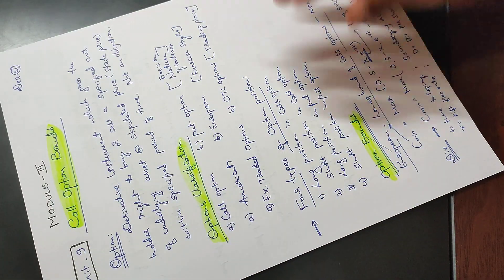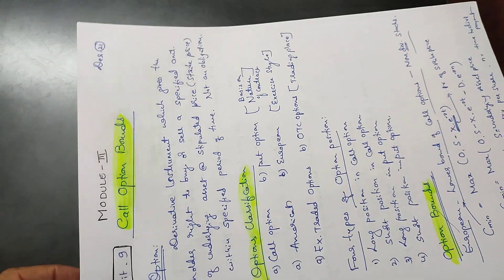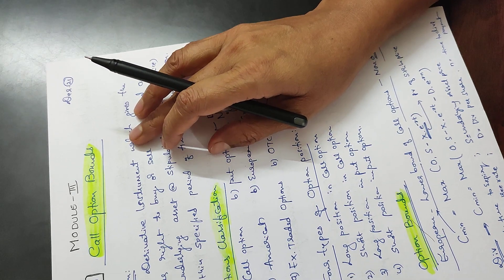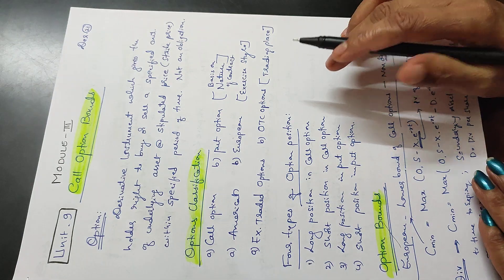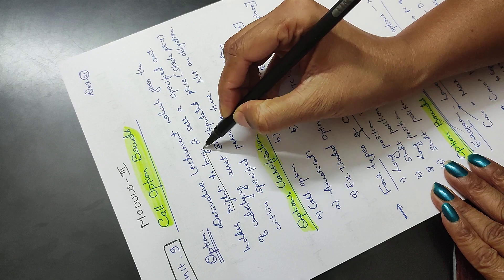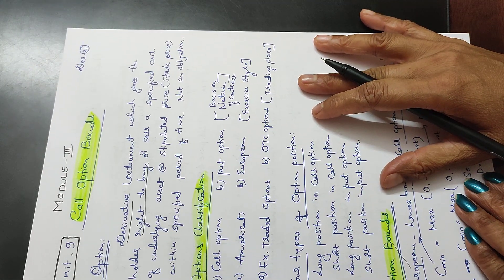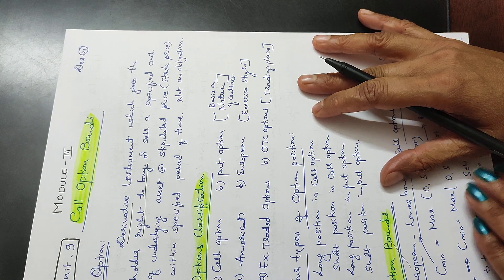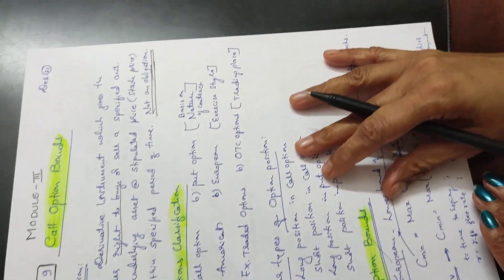Next, coming to module 3, unit 9 — call options and put options. Options are a derivative instrument which gives the holder the right to buy or sell a specified amount of an underlying asset at a stipulated price within a specified period of time. It's not an obligation; there is no obligation. It's a right to buy or sell.